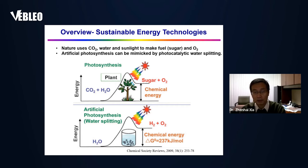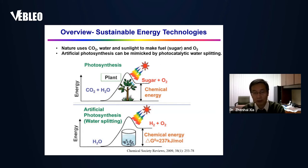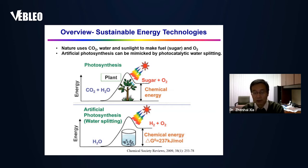If we look at the reactions, one very interesting and clean reaction is water splitting. This water splitting could be used to mimic artificial photosynthesis. In this process, water is split into hydrogen as a fuel and oxygen by using sunlight.